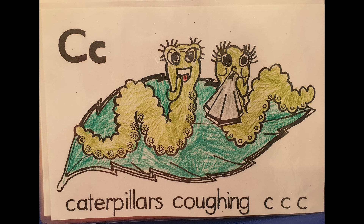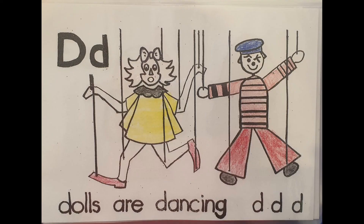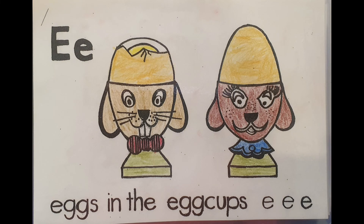These are the sounds our letters make. Dolls are dancing — d, d, d. Eggs in the egg cups — e, e.